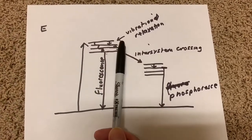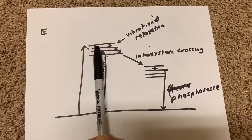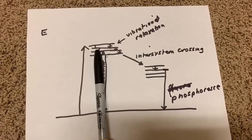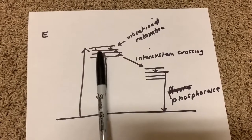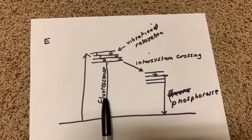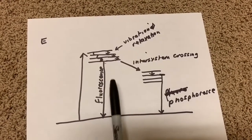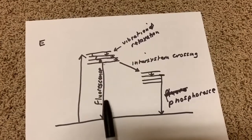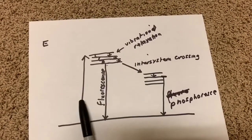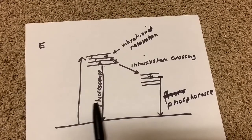the electrons get excited into higher energy levels. Through vibrational relaxation, they lose some of that energy and drop into slightly lower sub-levels, then drop back down to the original level from which the excitation took place. This is fluorescence, and this process occurs almost instantaneously.